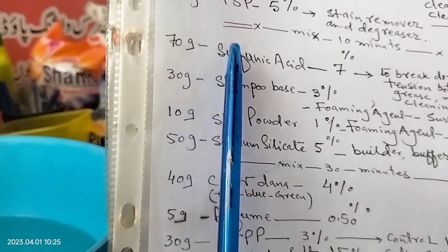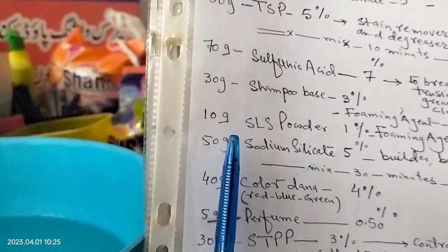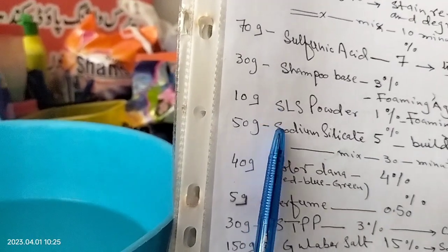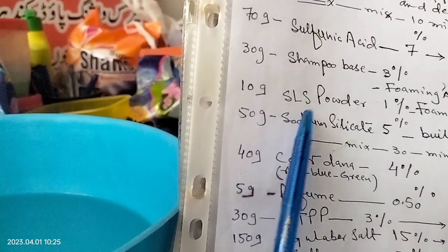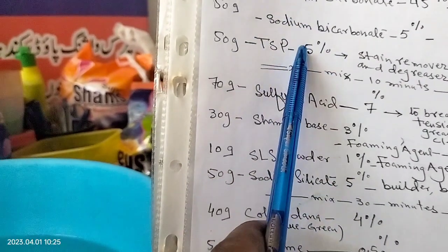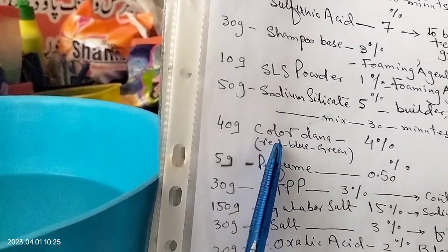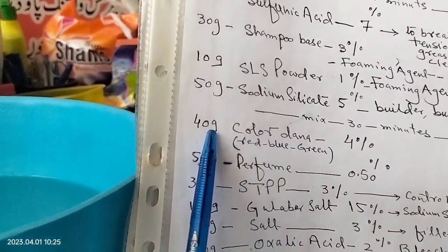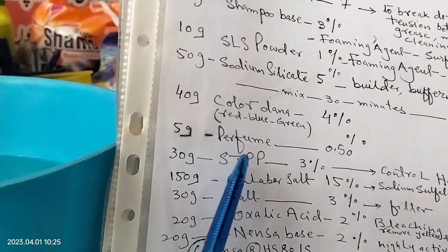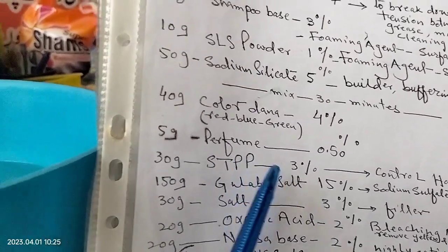My lovely friend, 1, 2, 3, 4 atoms mix. It will convert to a paste, a cream. After 30 minutes, this cream will mix with the above base for 10 minutes. Now Color Dana 4%, 40 grams. Perfume half percent, 5 grams. HTPP to control hard water, 3%, 30 grams.